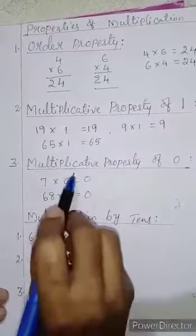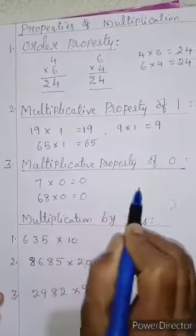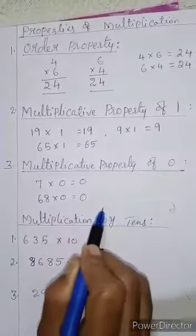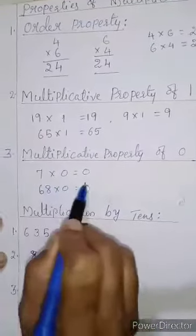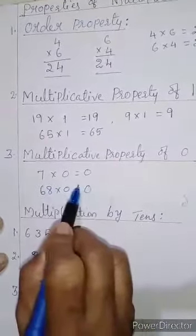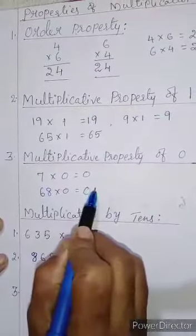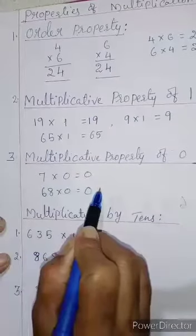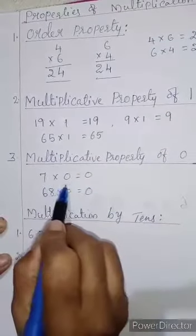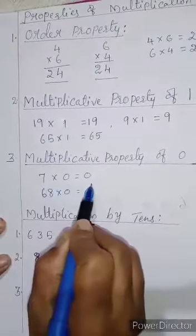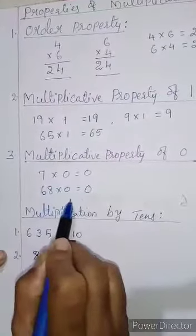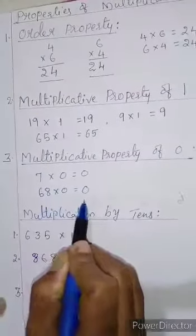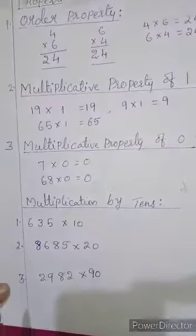The third property: multiplicative property of 0. When a number is multiplied by 0, the result is 0. For example, 7 multiplied by 0 is 0, and 68 multiplied by 0 is also 0.